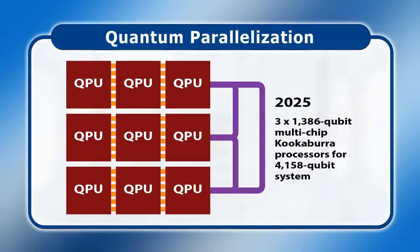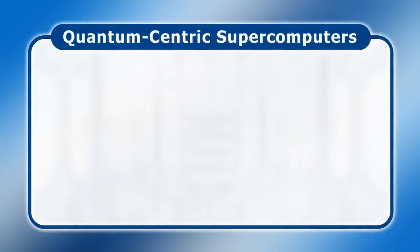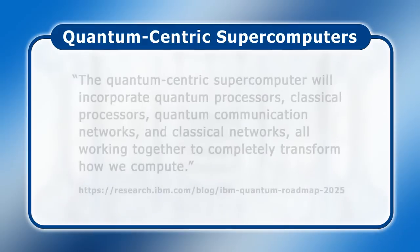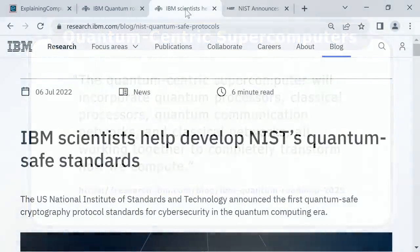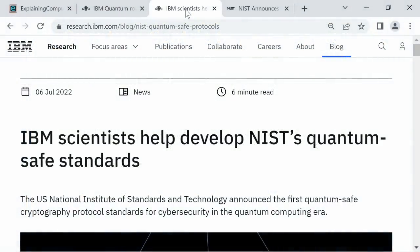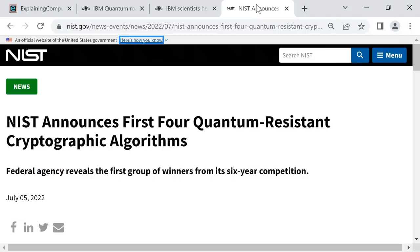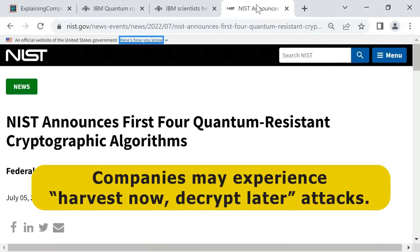Looking even further ahead, IBM states that its goal is to build quantum-centric supercomputers — incorporating quantum processors, classical processors, quantum communication networks, and classical networks all working together to completely transform how we compute. In anticipation of the power of such future systems, in July 2022 the National Institute of Standards and Technology in the United States announced the first quantum-safe standards for cybersecurity. These were partially developed by IBM scientists and reflect the growing concern that companies may experience harvest now, decrypt later attacks — in other words, a growing risk that data will be stolen today for quantum decryption in the future.